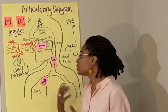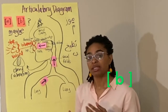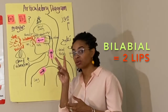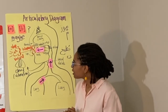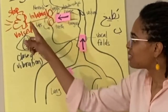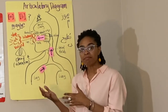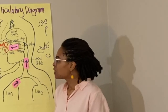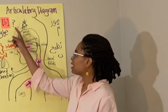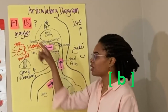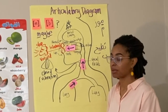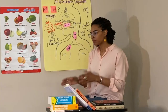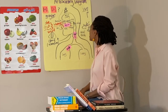A voiced bilabial stop tells us we're making a sound that needs both lips. That could be the 'b' sound or the 'm' sound — both require two lips. However, the difference is that we have a stop sound here, and the 'm' sound is a nasal sound. So we can only be describing the 'b' sound — the voiced bilabial stop — rather than a voiced bilabial nasal. You can see how that works.